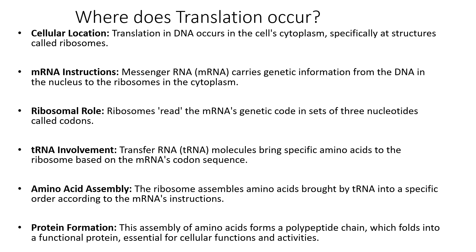This is quite a tricky concept to grasp if you're new to this — I will go through it in the next slide. Transfer RNA brings specific amino acids to a ribosome based on the mRNA's codon sequence. The ribosome then assembles the amino acids brought by the transfer RNA into a specific order according to mRNA's instructions. The assembly of amino acids forms a polypeptide chain which folds into a functional protein essential for cellular activities.